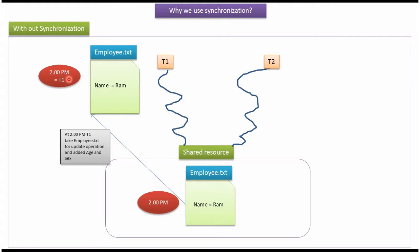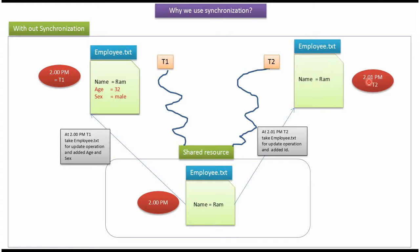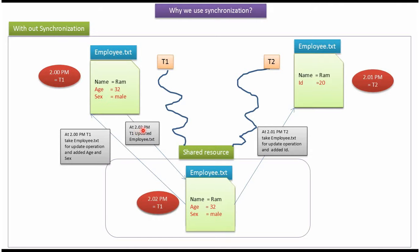At 2 pm, thread1 takes the employee.txt file for update operation and added age equal to 32 and sex equal to male. Before thread1 updates this new information in the file system, thread2 takes the employee.txt file for update operation at 2.01 pm and added id equal to 20. At 2.02 pm, thread1 updated the employee.txt file. Now the employee.txt file contains age equal to 32 and sex equal to male.